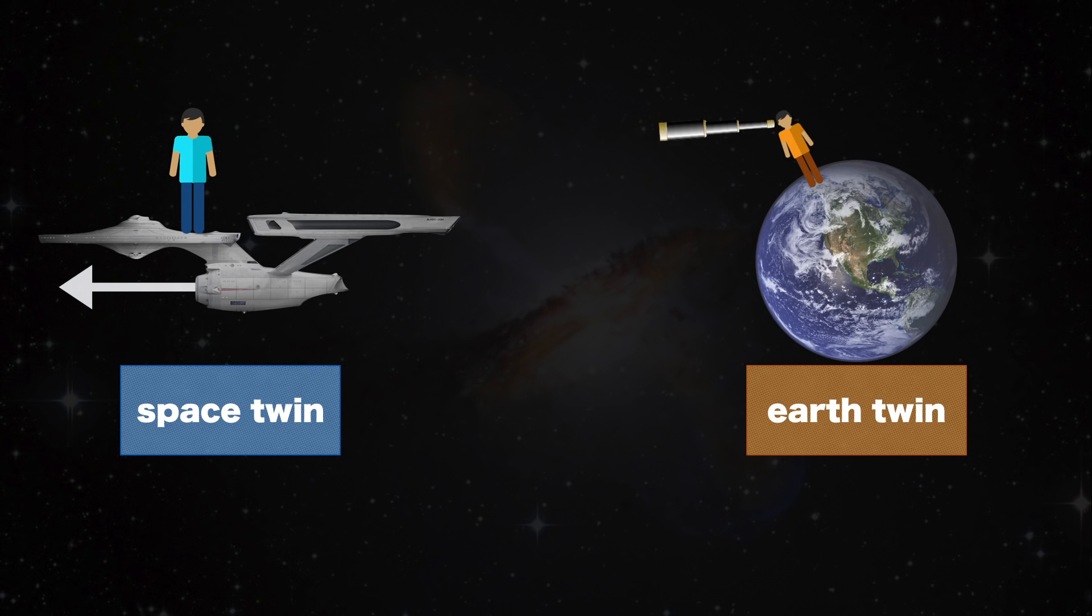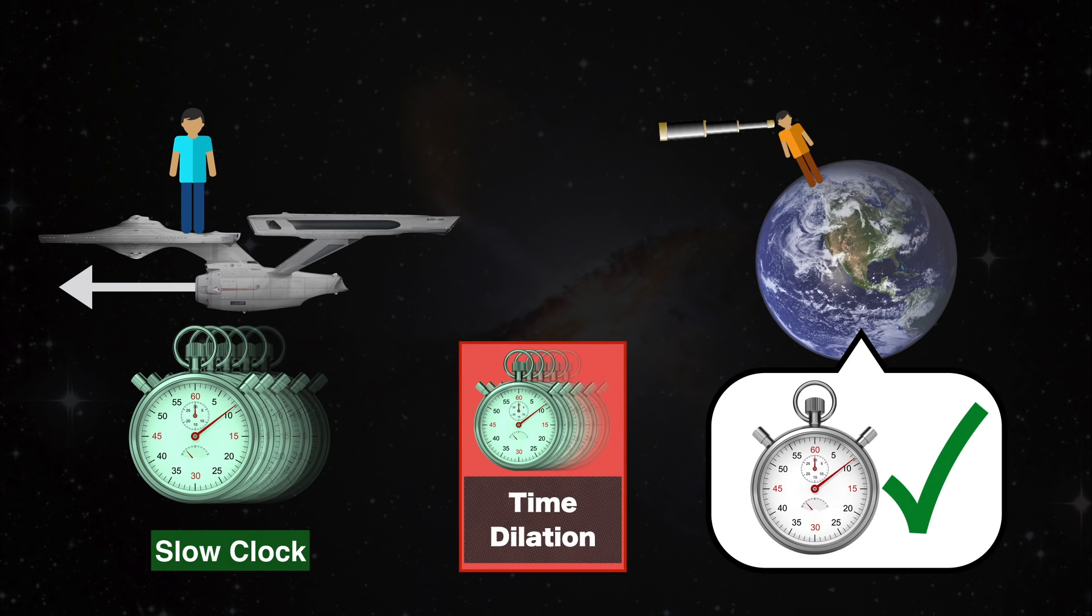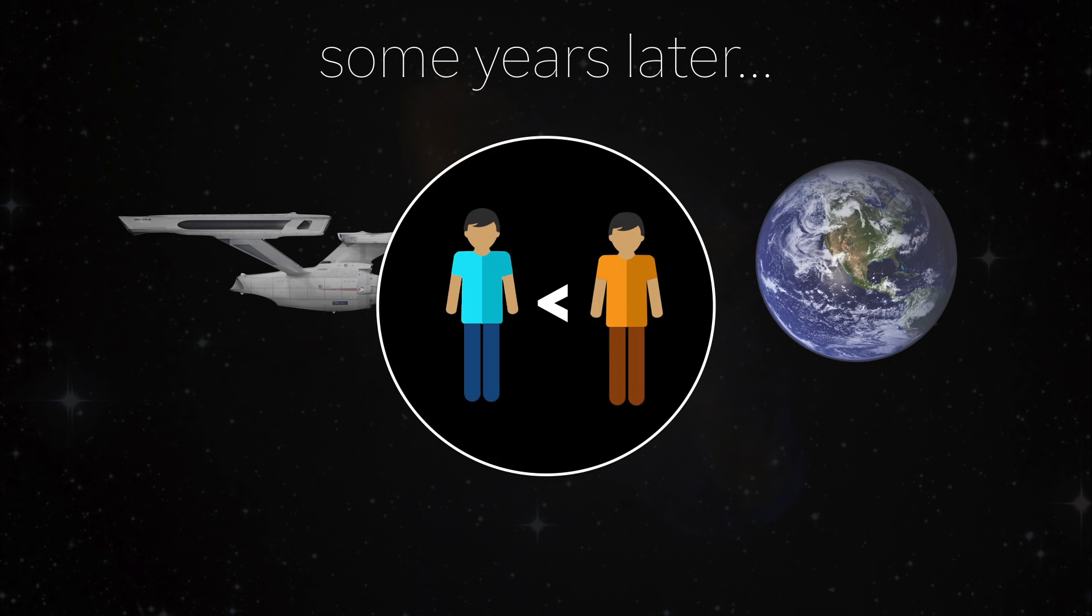Back to the twins. When Earth Twin observes fast-moving Space Twin, he will see Space Twin's time run slower than his own because of time dilation. Therefore, Space Twin should be younger upon his return, right?